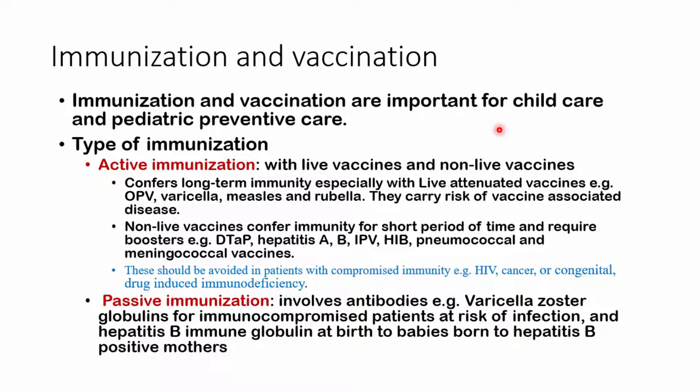There are two types of immunization that we could undertake. We could have active immunization, where we're going to be injecting a component of the etiological organism. This could be a live attenuated vaccine, a killed vaccine, or an inactivated vaccine. Or it could be passive immunization, where we're going to be injecting antibodies into this individual, for example, with varicella zoster globulins.